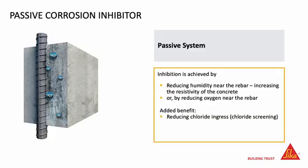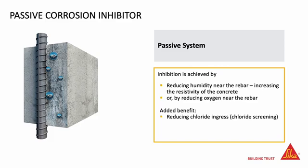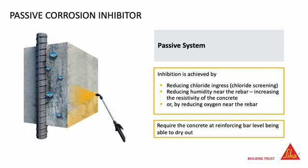The passive systems act differently by reducing the humidity at the reinforcing bar level. As a consequence, the resistivity of the surrounding concrete increases, reducing the corrosion rate. Using concentrated silane passive inhibitor, another big advantage is achieved: that of preventing further penetration of chlorides in the concrete. However, this technology can be used only at areas where the concrete is able to dry out, as the silane will prevent liquid water from penetrating the concrete but allows water vapor to escape. If this is prevented somehow, they will not be able to perform as a corrosion inhibitor.